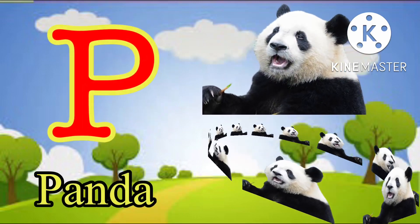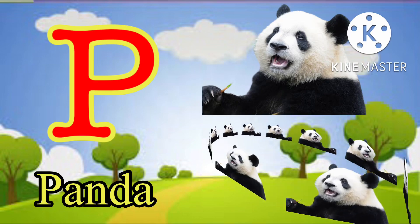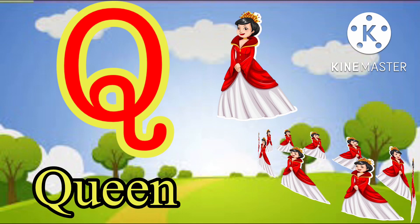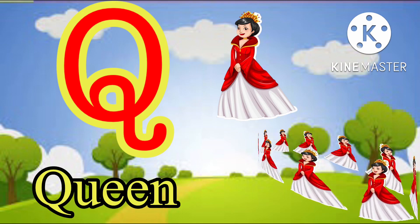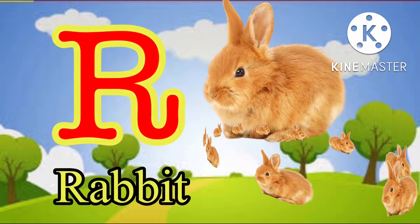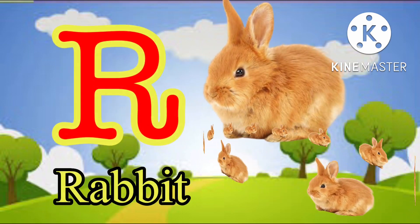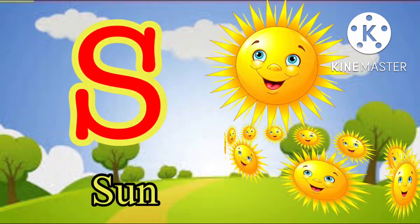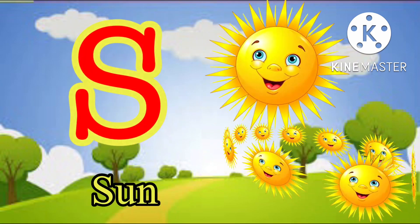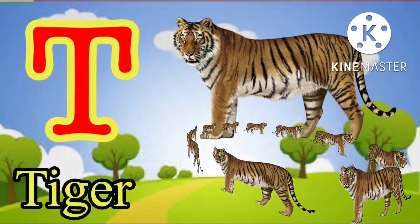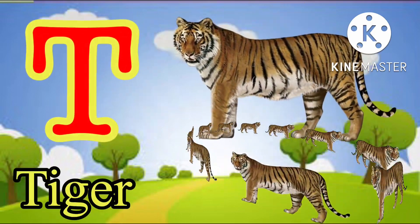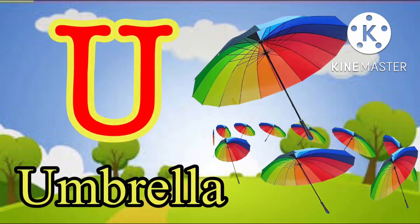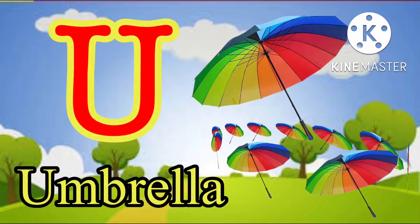P for panda, Q for queen, R for rabbit, S for sun, T for tiger, U for umbrella.